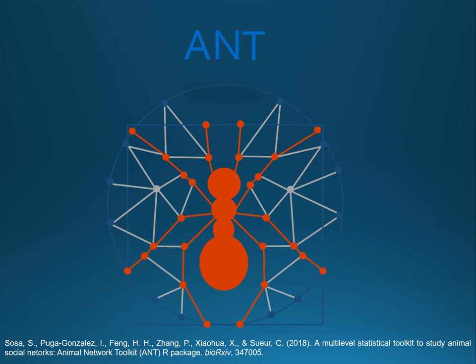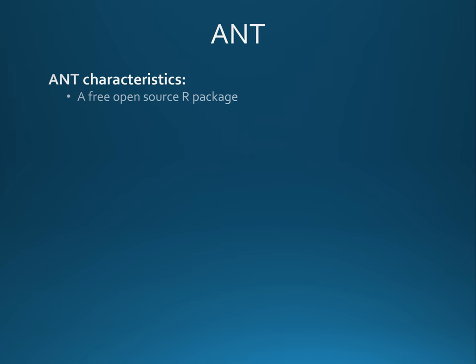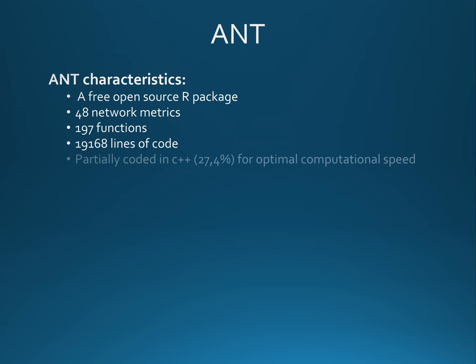ANT is a free open-source R package. It has 48 network metrics, 197 functions, 19,168 lines of code coded in C++ partially for optimal computational speed. It handles multiple data collection protocols,